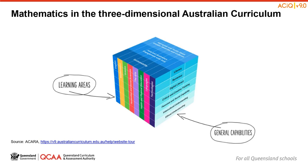The general capabilities have been refined, with changes to elements, sub-elements and Continua. There are three cross-curriculum priorities – Aboriginal and Torres Strait Islander histories and cultures, Asia and Australia's engagement with Asia, and sustainability. When reflecting on how you are going to align your current plan for teaching and learning to Version 9, consider what opportunities exist to make connections across these three dimensions.